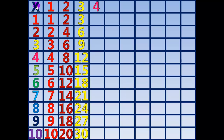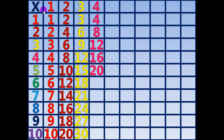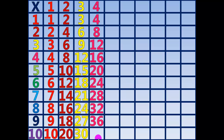4 times 1 equals 4. 4 times 2 equals 8. 4 times 3 equals 12. 4 times 4 equals 16. 4 times 5 equals 20. 4 times 6 equals 24. 4 times 7 equals 28. 4 times 8 equals 32. 4 times 9 equals 36. 4 times 10 equals 40.